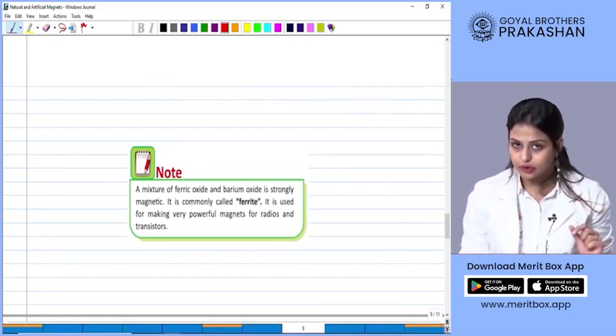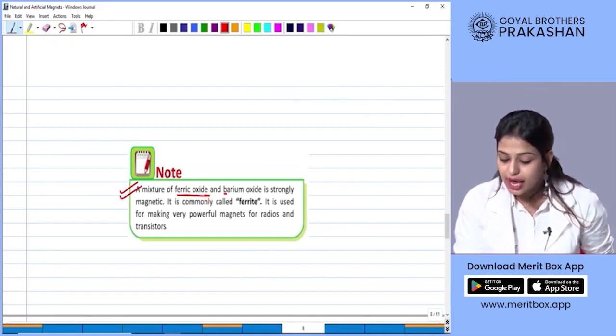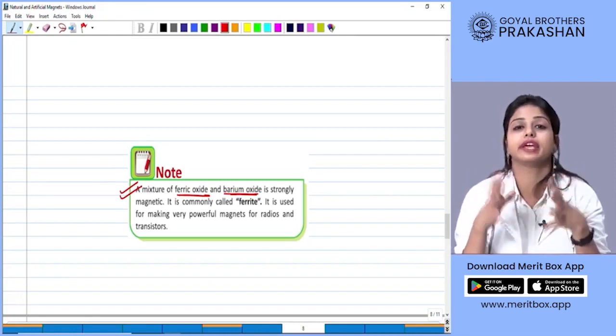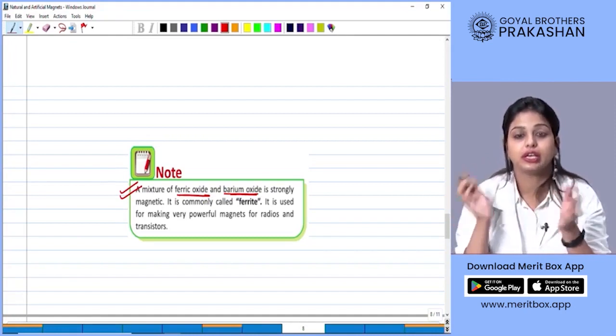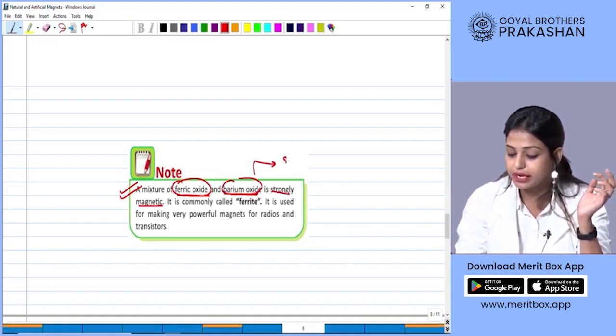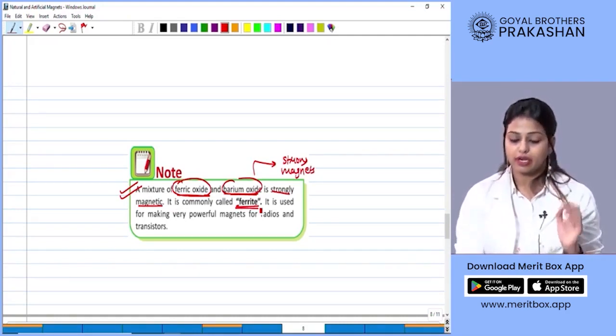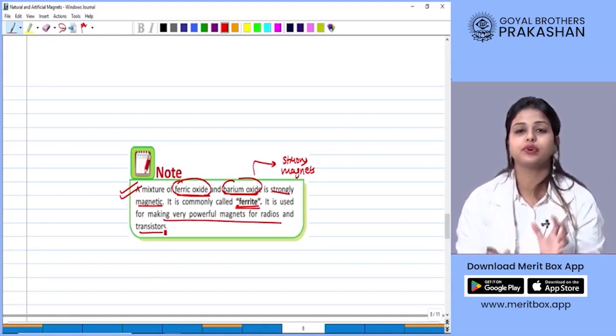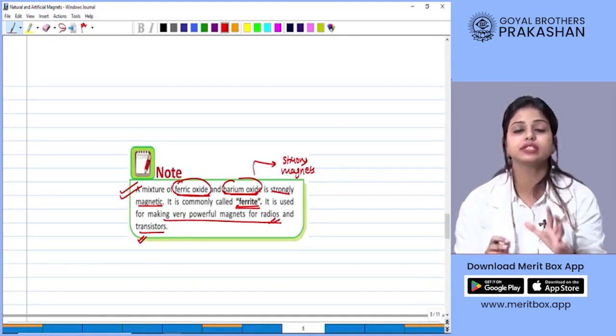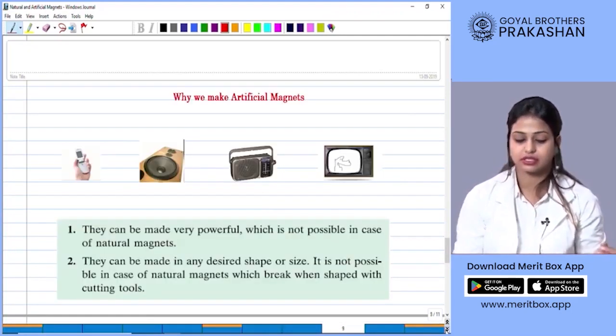Now there is a very small note for you to get some information. A mixture of ferric oxide, now this is a compound, and barium oxide is strongly magnetic. Now this is an example of how you can make very strong magnets artificially. If you use a mixture of ferric oxide and barium oxide, you can make a very strong magnet. These kind of magnets are called ferrite. It is commonly called ferrite. It is used to make powerful magnets for radios and transistors. This is the application of such very strong magnets. Where they are used? They are used in various components like radios and transistors.